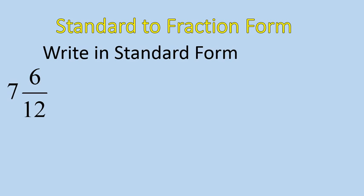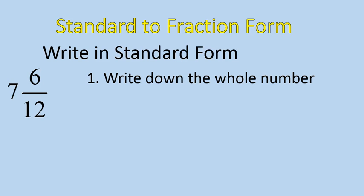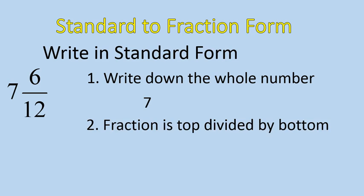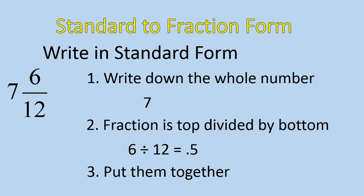We're asked to write in standard form: 7 and 6 twelfths. To do this, if you're given it in fraction form and asked to write it in standard form, follow these steps. First, write down the whole number: 7. Second, to convert the fraction into a decimal, take the numerator and divide by the denominator. So the fraction 6 over 12 is 6 divided by 12, which gives you 0.5. Put them together: 7.5. That's how we write fraction form into standard form.